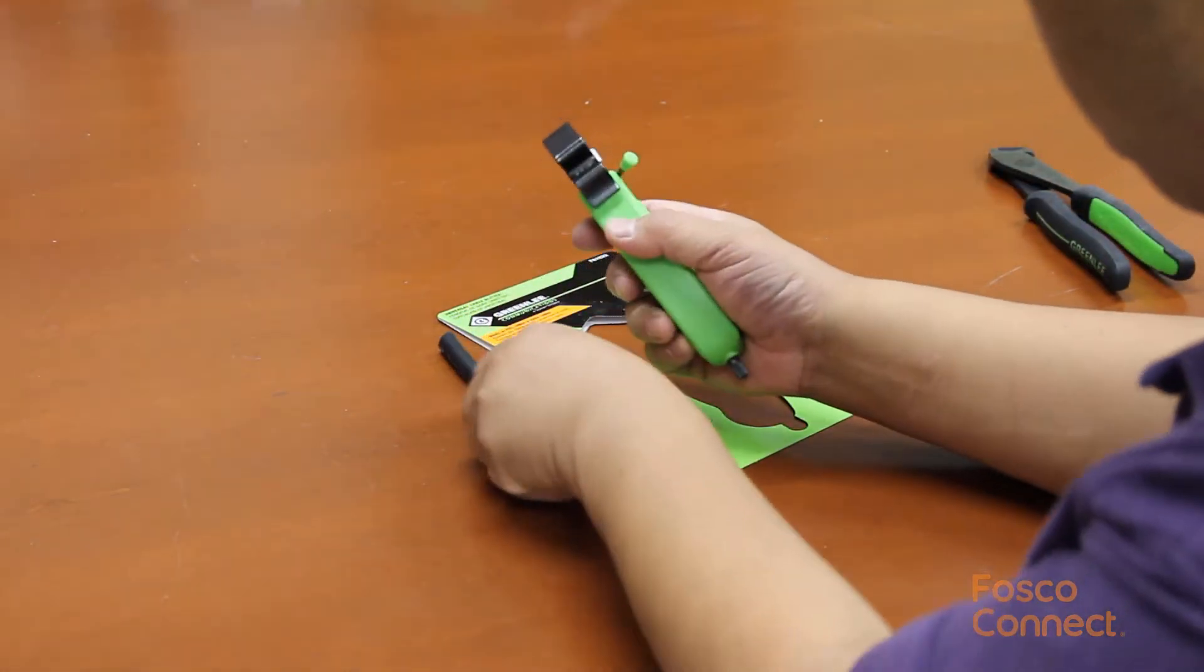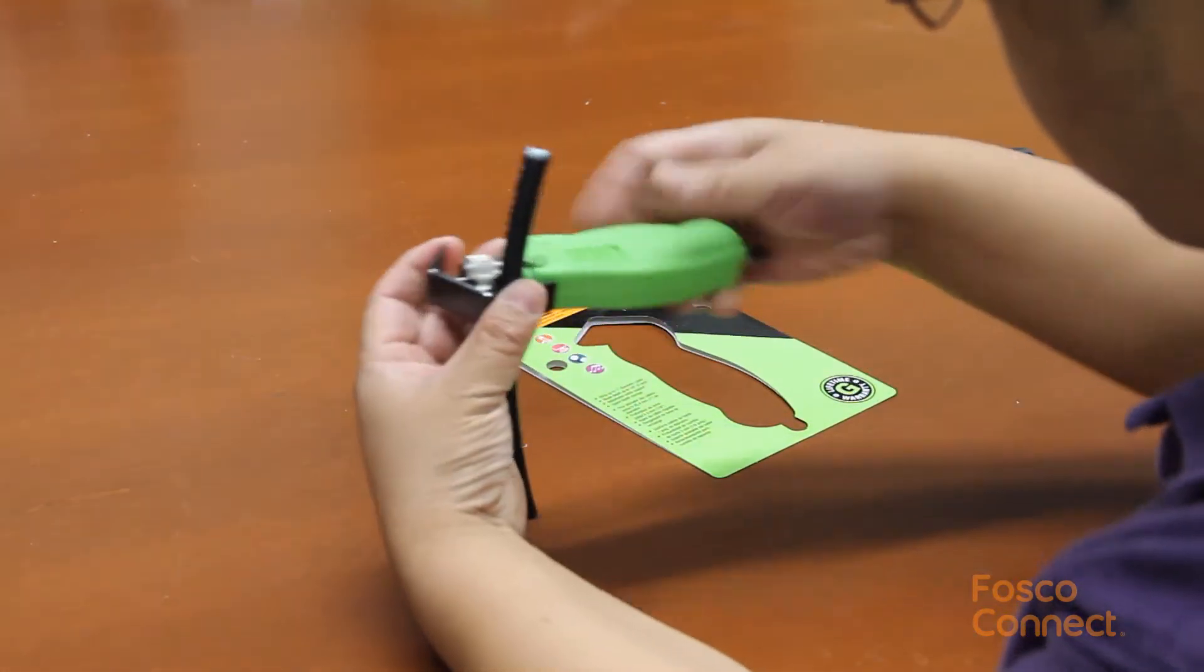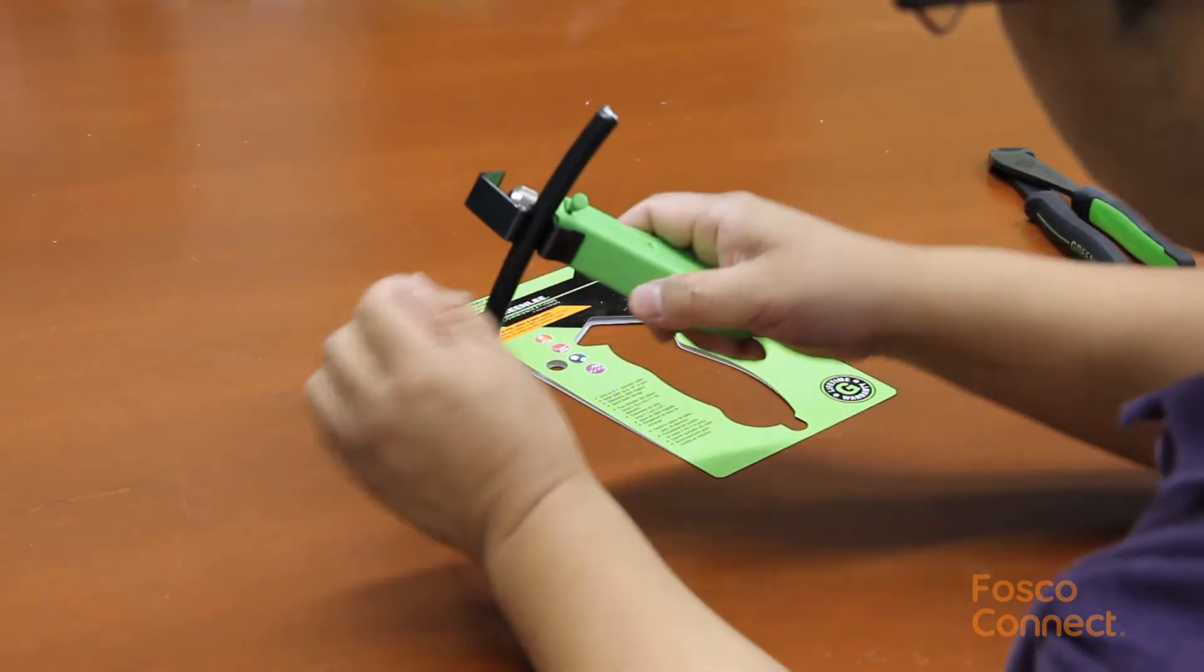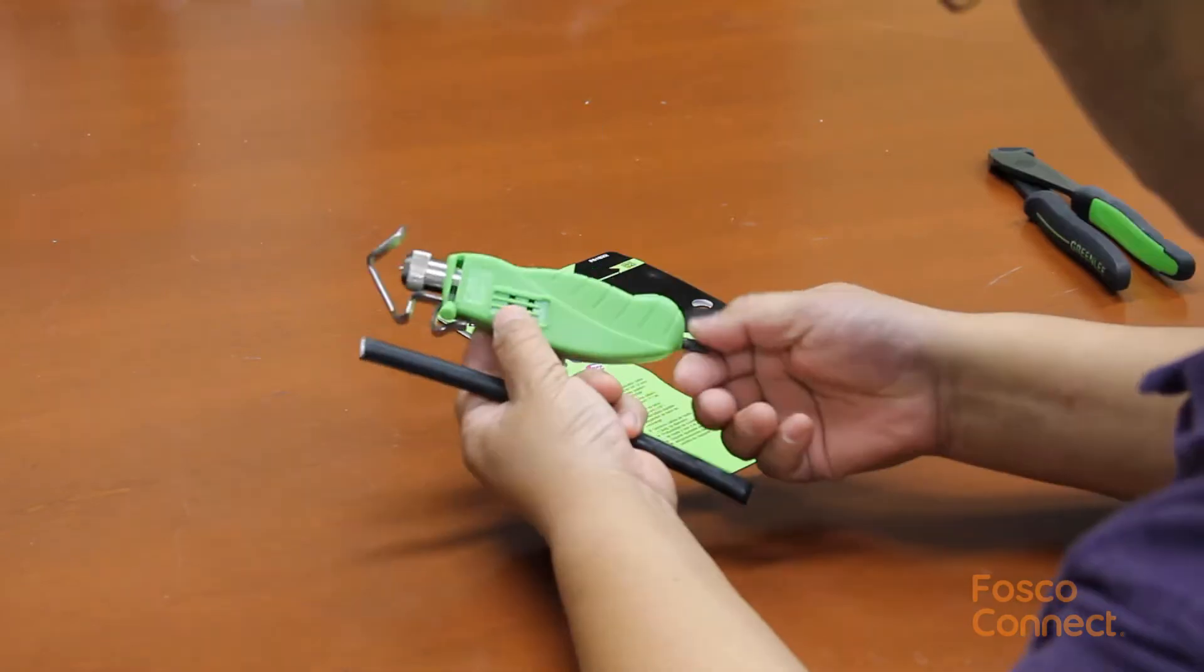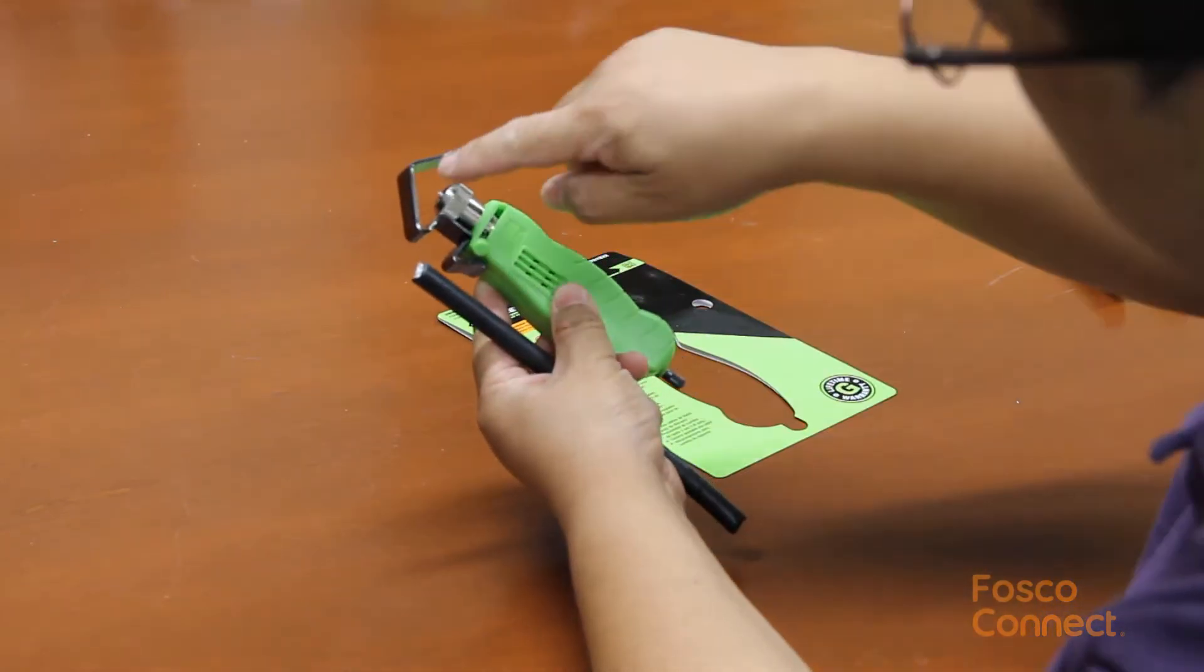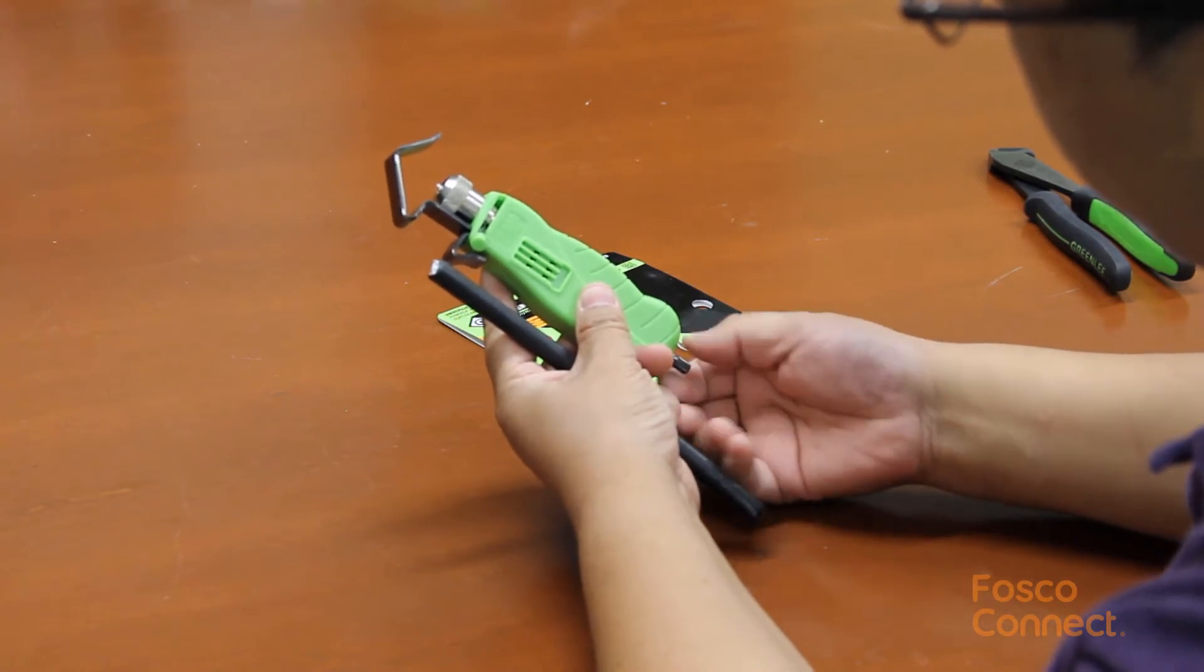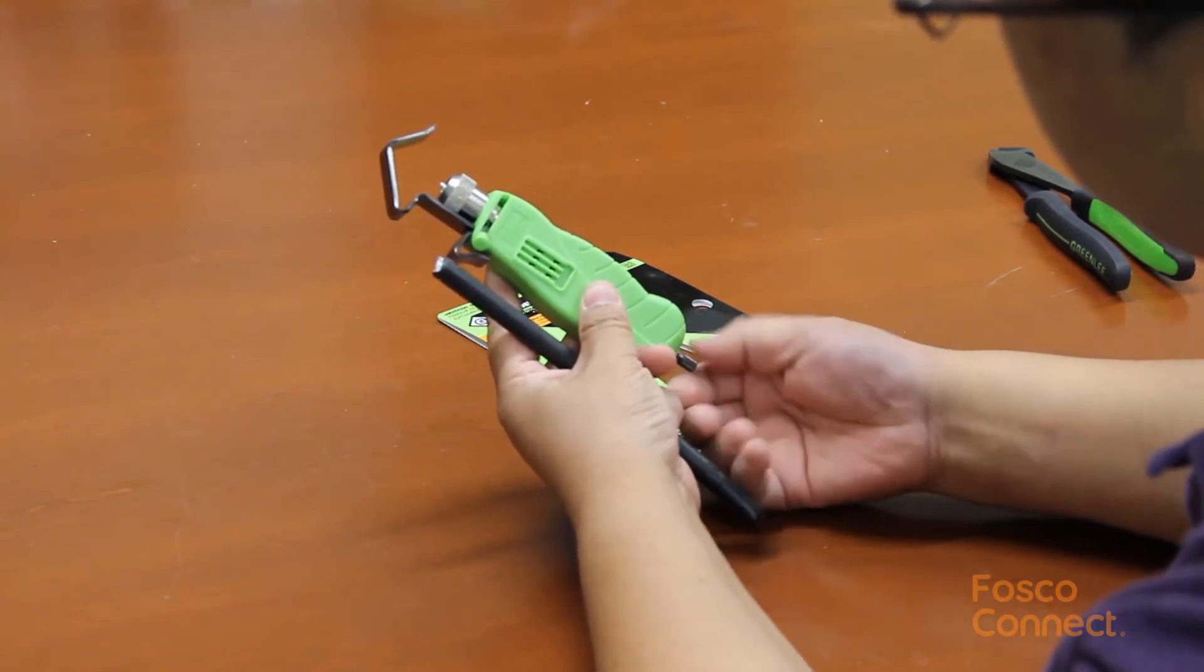You can measure the cable diameter with this slot and the adjustment knob at the bottom. The bottom knob also adjusts the tool for your cable diameter from a minimum of 0.18 inch to 1 inch maximum.